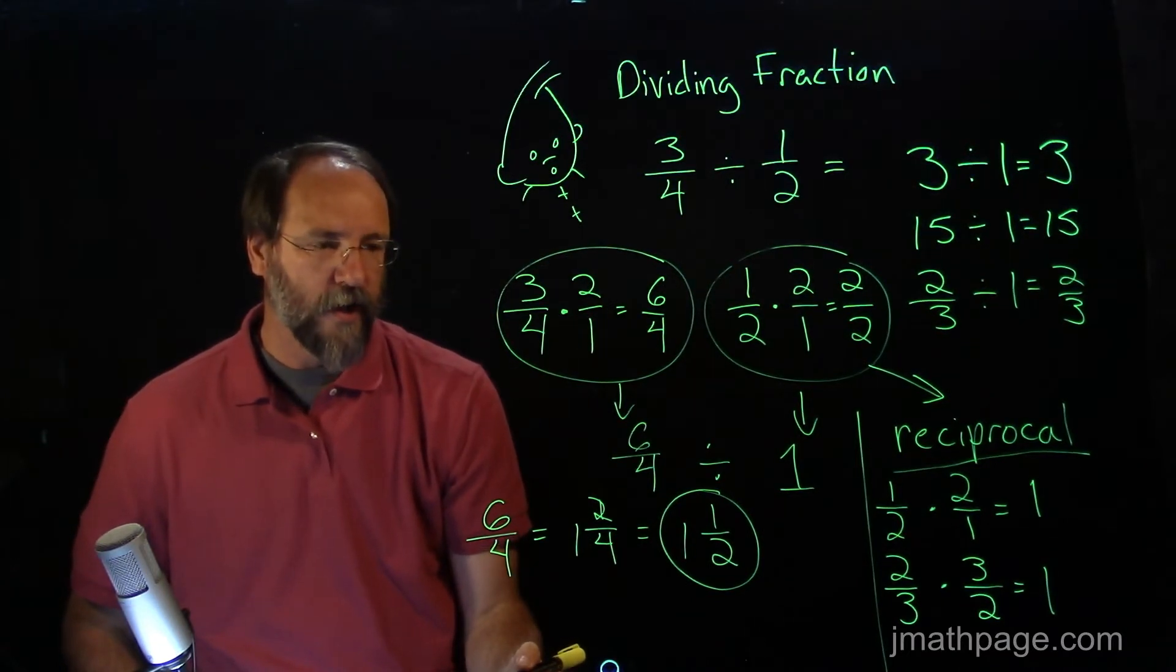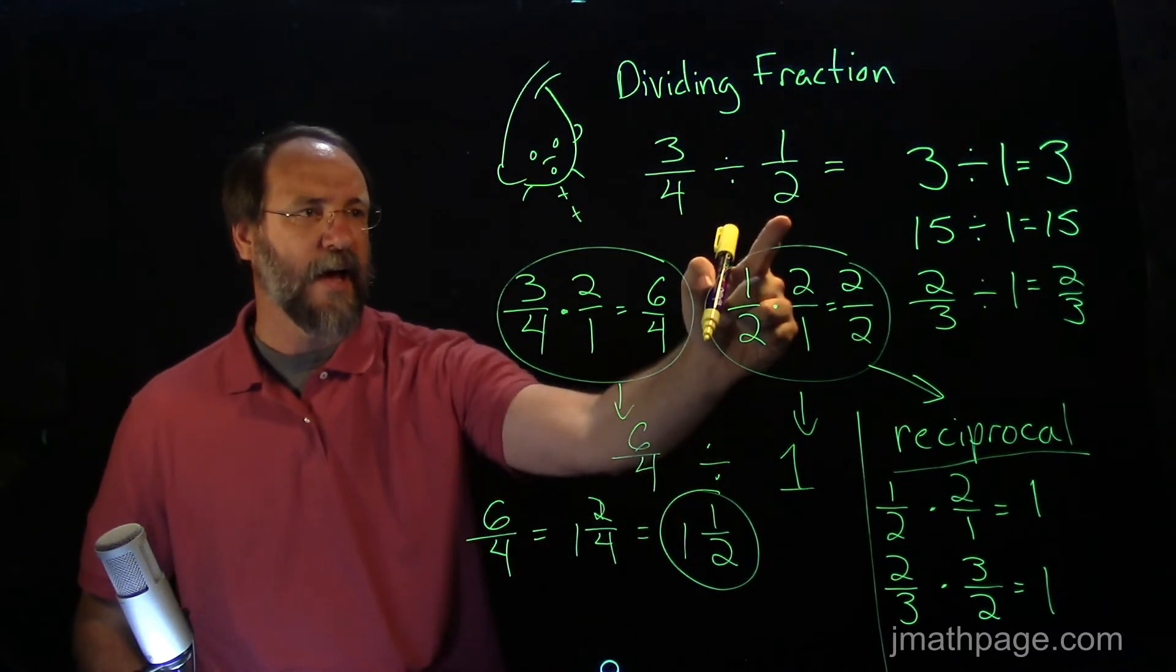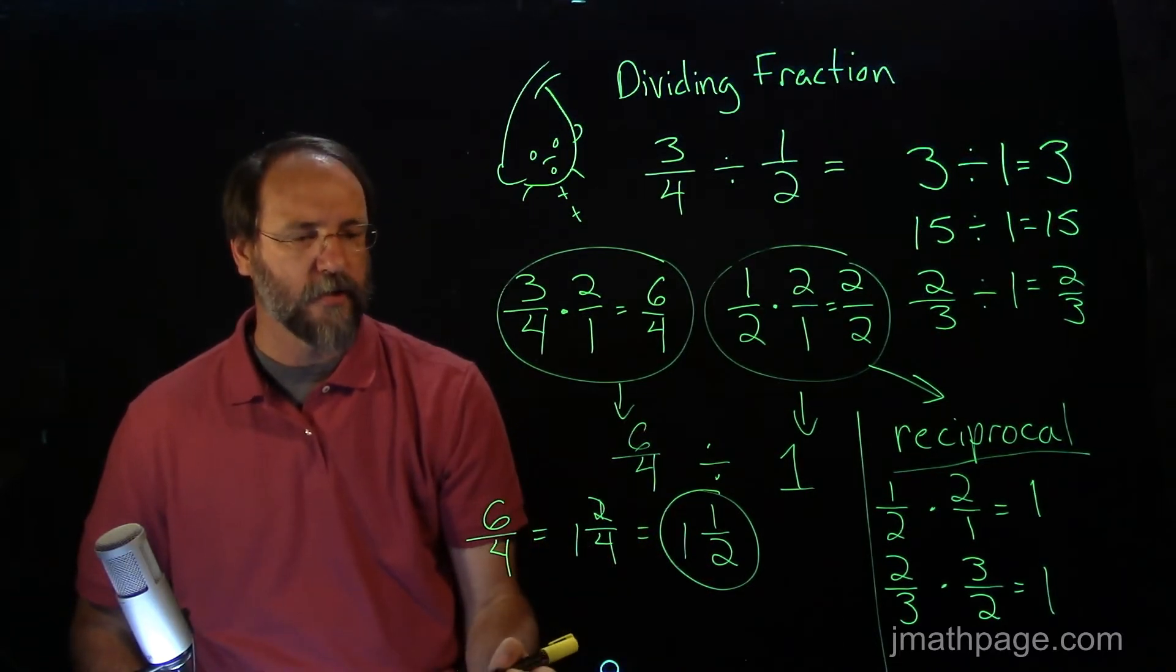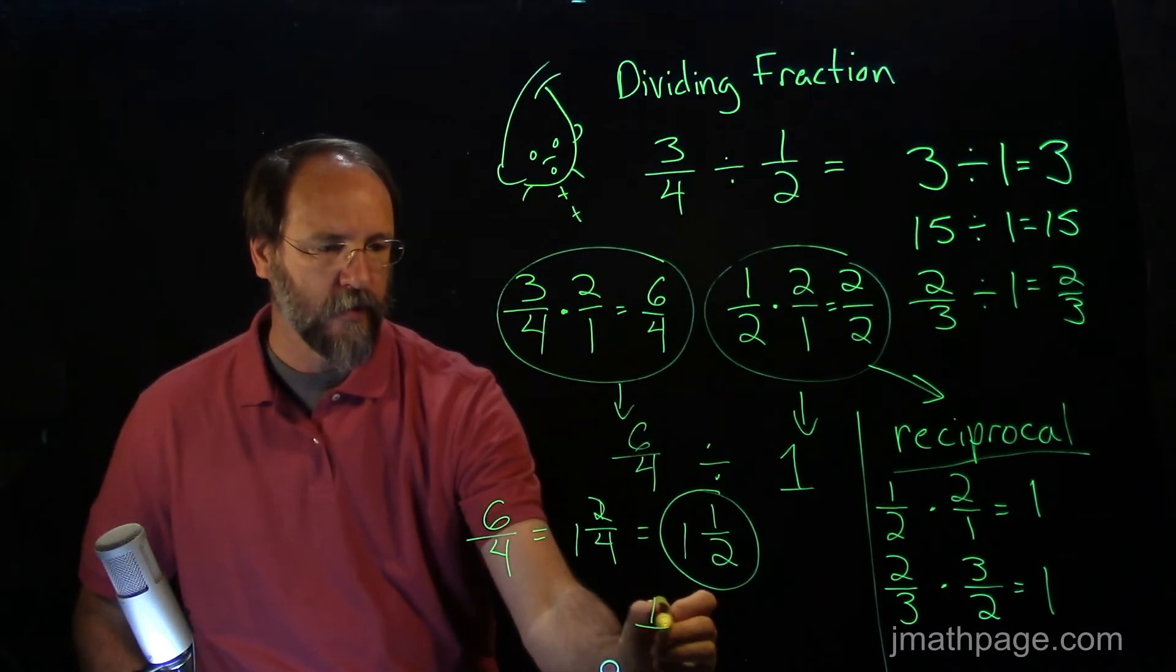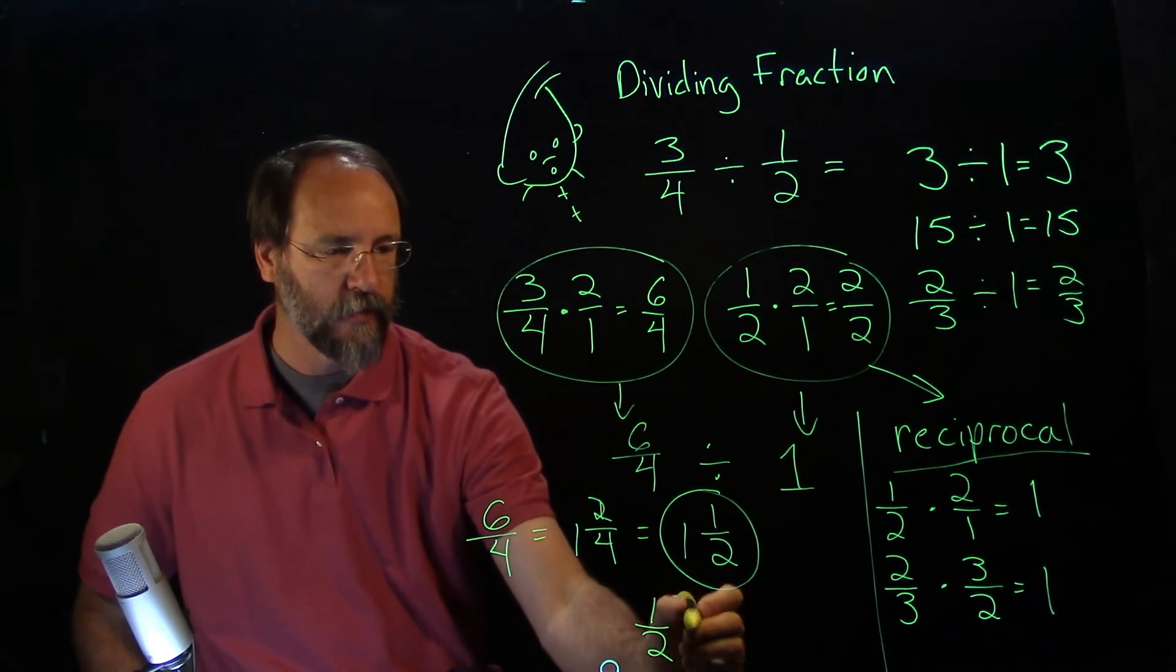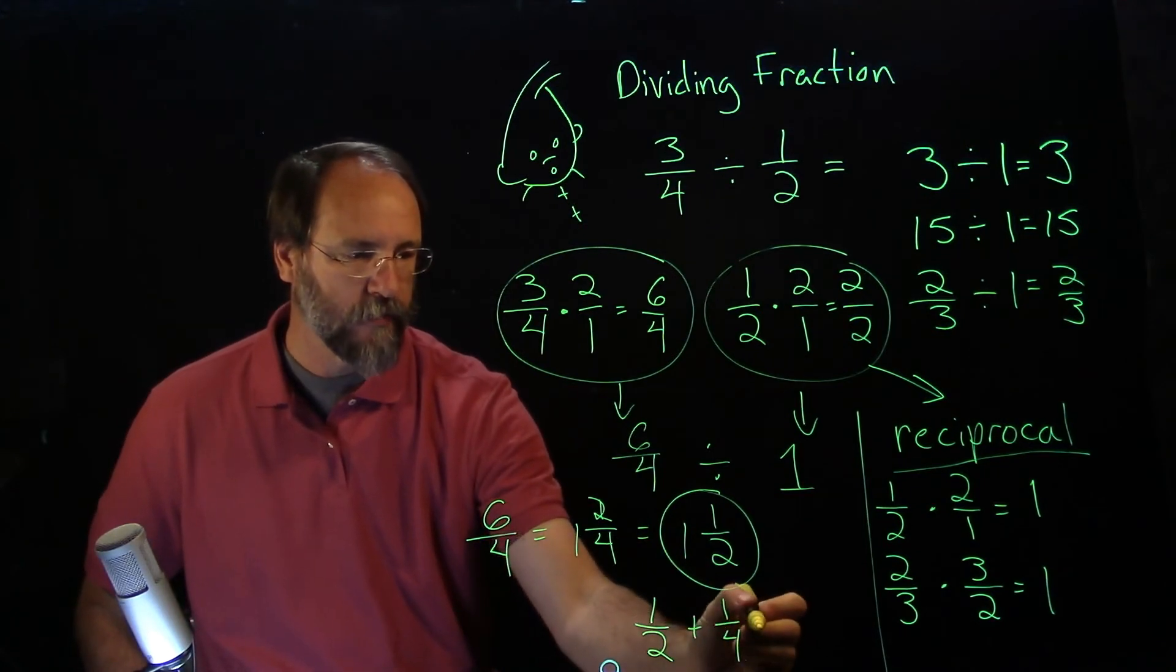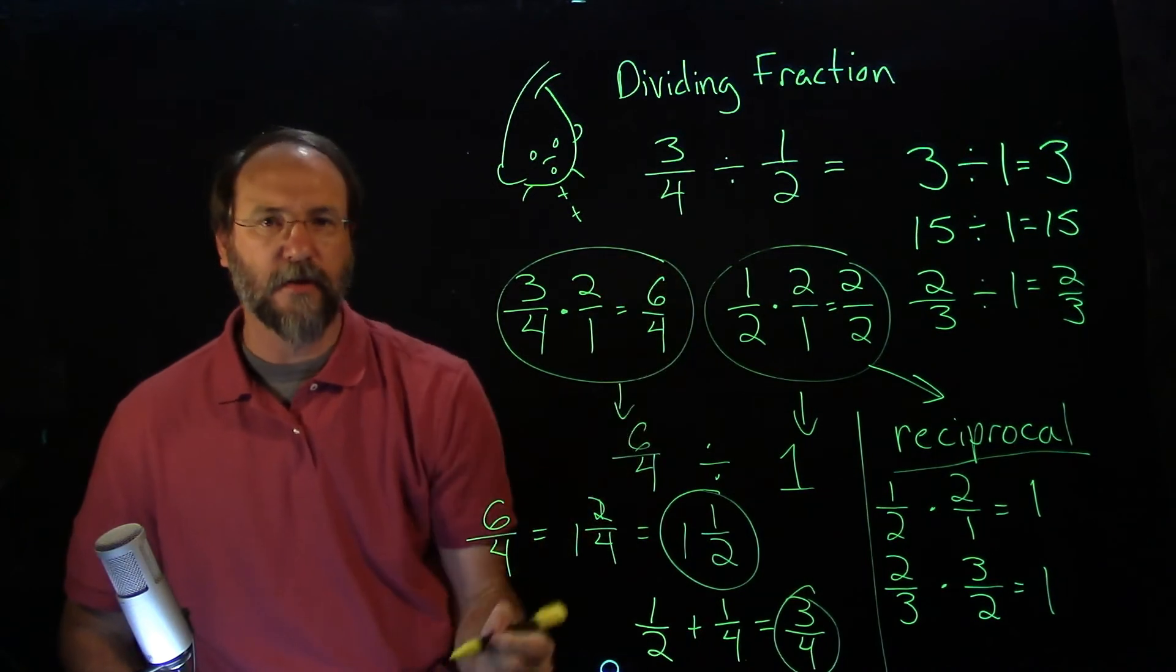Now, how do we know that? Let's ask the question again. How many halves are there in three-fourths? What we're saying now is that there's one-and-a-half halves. Let's try that out. One-half is a half. A half of a half is a quarter. A half plus a quarter gives us three-fourths. And that's what we started with.